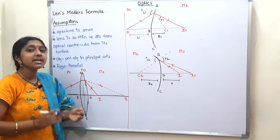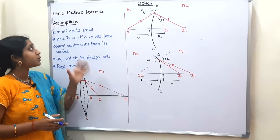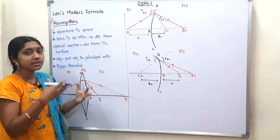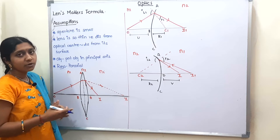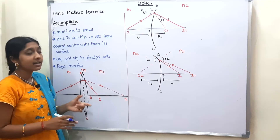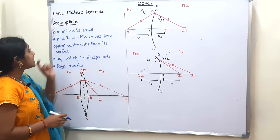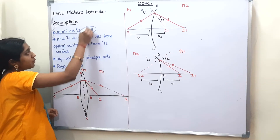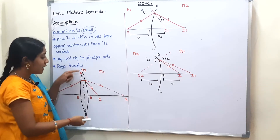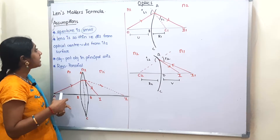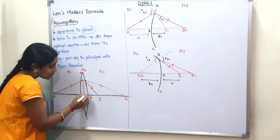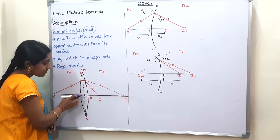The Lens Makers Formula is very useful. We will talk about the derivation, starting with assumptions and diagrams. We will begin with the Lens Makers Formula, covering the optical center distance as well.